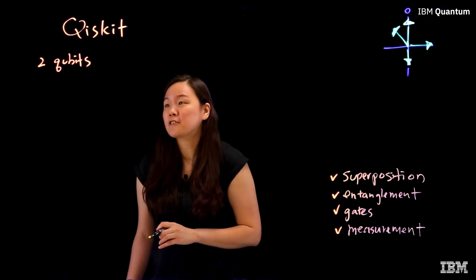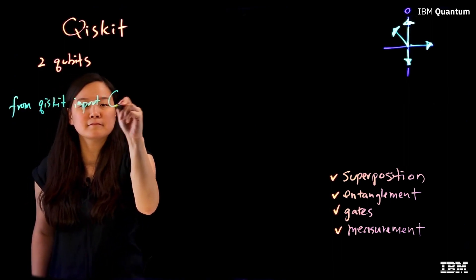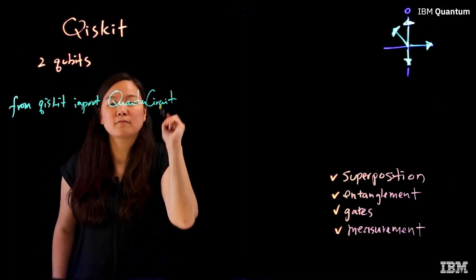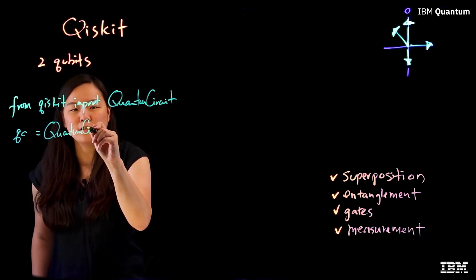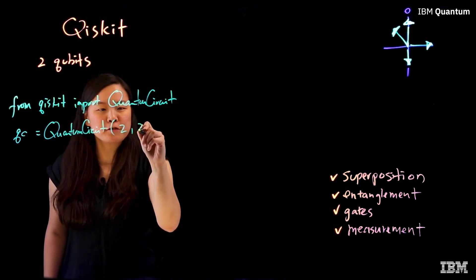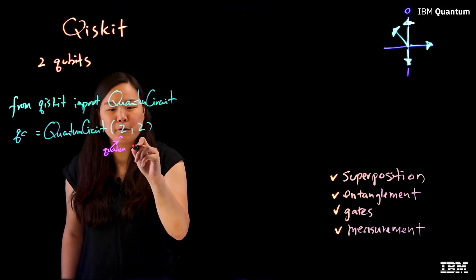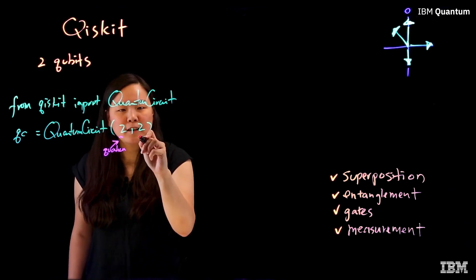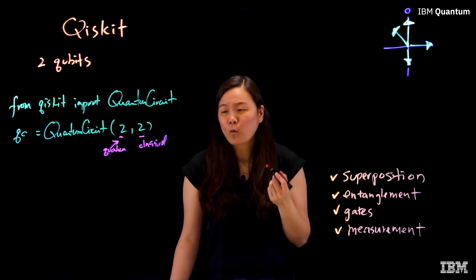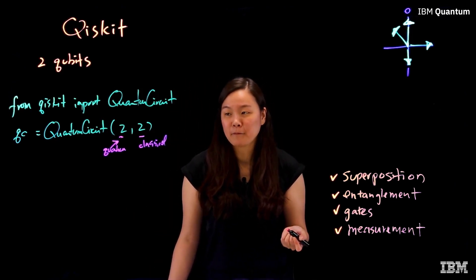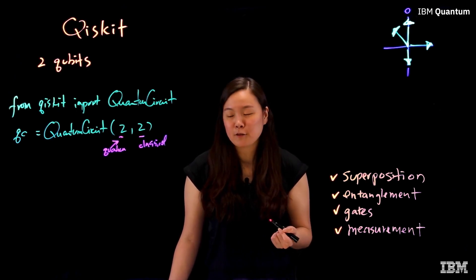So let's start by importing quantum circuit from Qiskit. We then can create a quantum circuit with two quantum registers and two classical registers. The quantum registers are used for quantum computation, one for each qubits. And the classical registers are used to store the measured results. We need the classical registers because even though the physical world is quantum, the majority of the classical world is still classical. And the classical registers allow us to bring the quantum information back into the classical world.